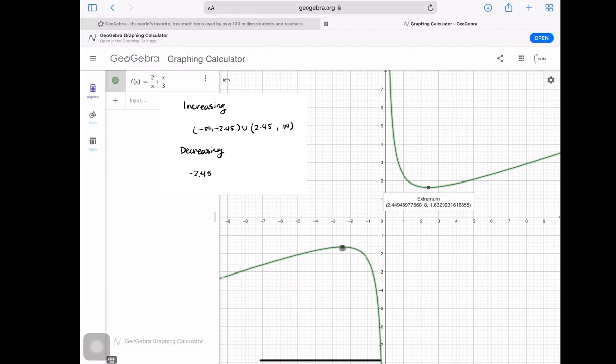The interval of decrease would start at negative 2.45 and go close, close, close to zero, but never hit zero. And then it would start again at zero and stop at 2.45. I hope you found this video helpful.